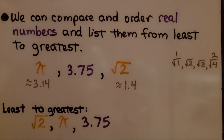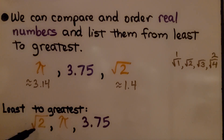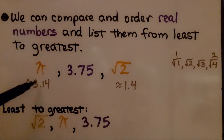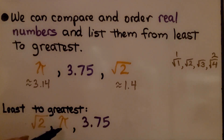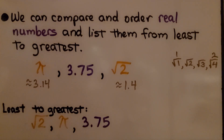So to order them from least to greatest: the least would be the square root of 2, then we would have the value of pi, and then we would have 3 and 75 hundredths.